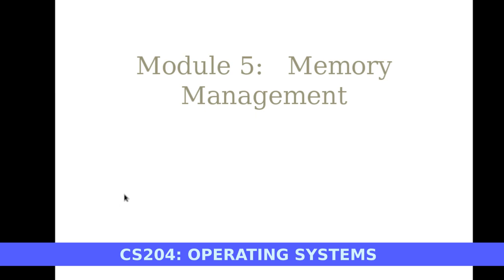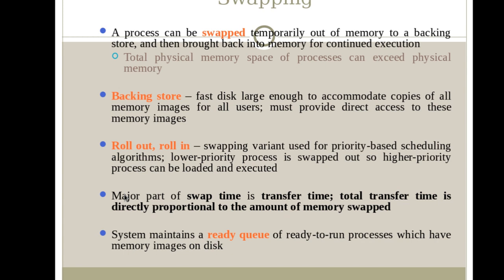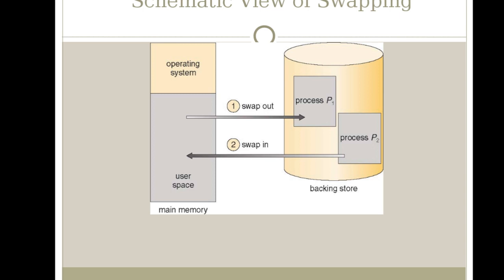Here I am going to discuss module 5: Memory Management. First we will see what is swapping. There are main memory and secondary storage within a computer. A process must be placed in main memory for execution, and the operating system is also located in main memory. Swapping is the process of moving various processes between main memory and secondary memory or backing store. When a process needs to be executed, it must be loaded from secondary memory to main memory — that process is known as swap in or roll in. The process which is no longer needed should be moved back to secondary storage, known as swap out or roll out.